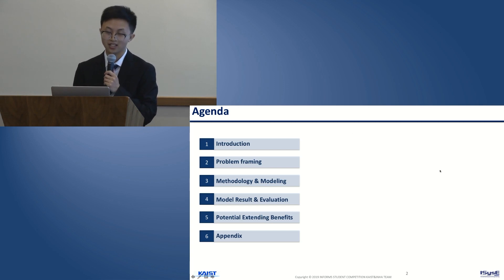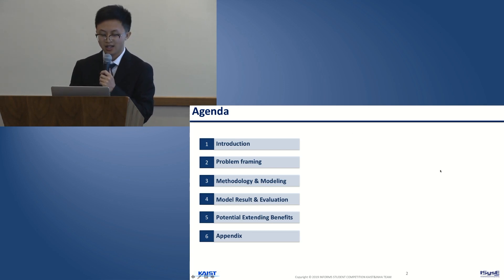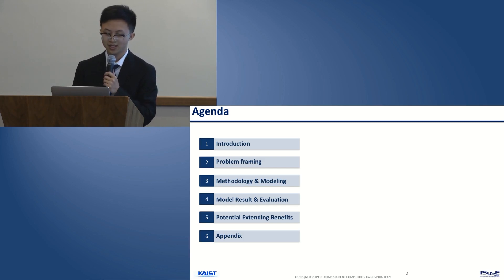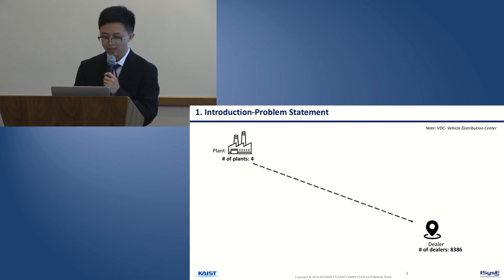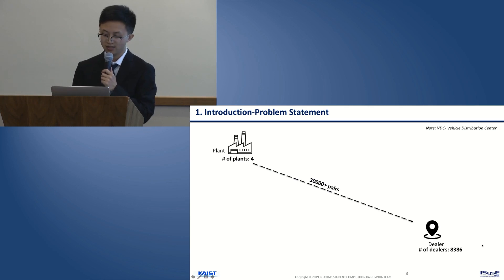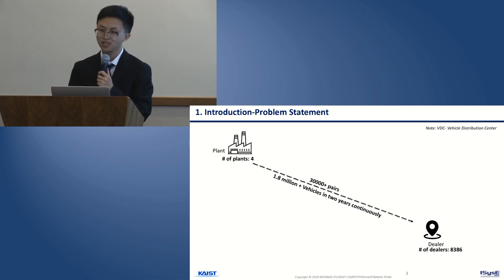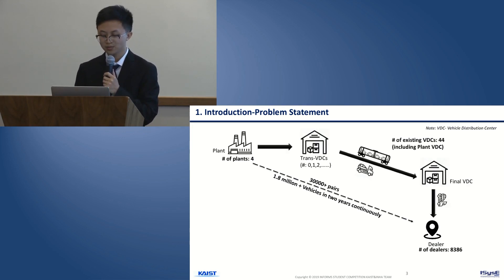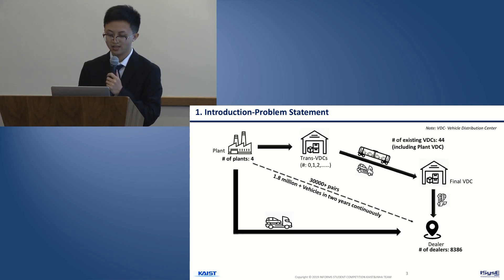For introduction and problem framing, I guess previous teams already gave you enough information, so I don't want to bore you again with similar things. I will just go through these parts quickly and move forward to focus more on our models. With four plants and over 300 dealers, we have over 30,000 pairs and need to deliver over 1.8 million vehicles distributed every day over two years continuously. Vehicles can go through VDC before going to dealers, or go from plant to dealers directly.